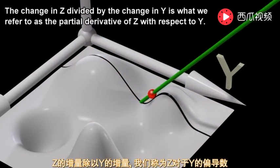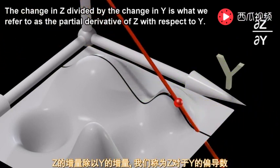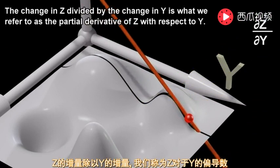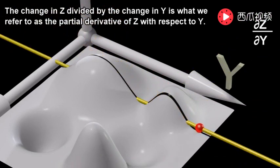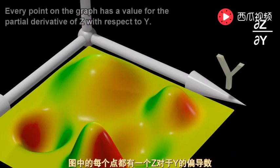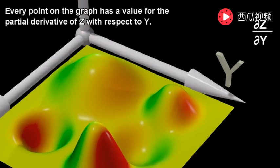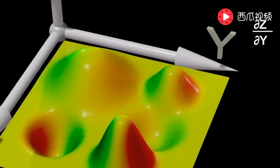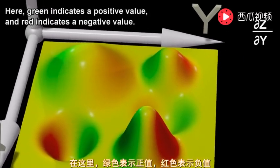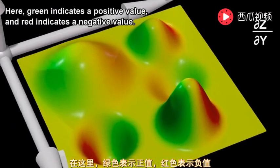The change in z divided by the change in y is what we refer to as the partial derivative of z with respect to y. Every point on the graph has a value for the partial derivative of z with respect to y. Here, green indicates a positive value and red indicates a negative value.